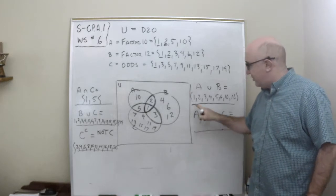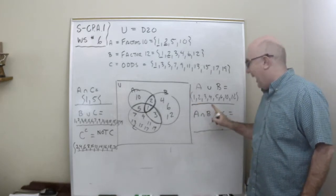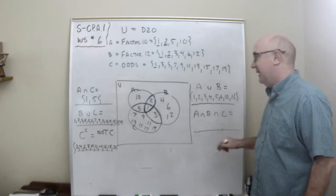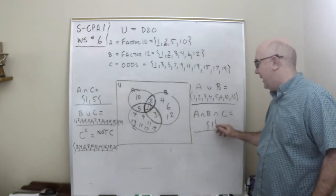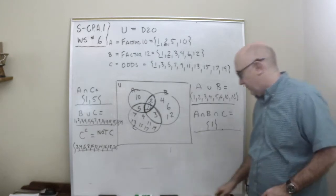Finally, what is the intersection of A and B and C? Ah, that's the number 1 right there. There's one item in A and B and C and so on.